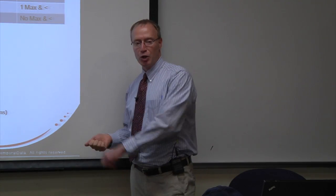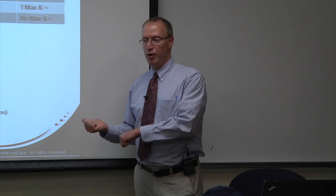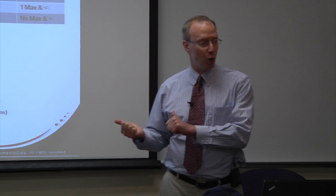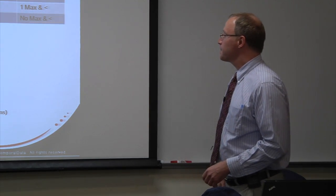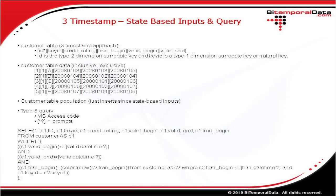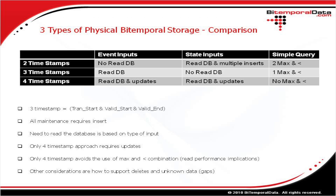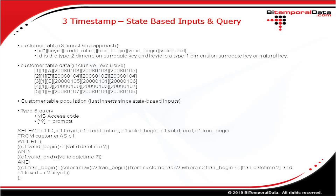That's a good hint as to why the four-timestamp approach was chosen for the upcoming ANSI/ISO temporal extensions. Now drilling down on the three-timestamp approach, state-based inputs, and the query to fulfill the type 6 query. There's a story behind each of the six cells in this matrix, and we'll drill down on a couple of them.